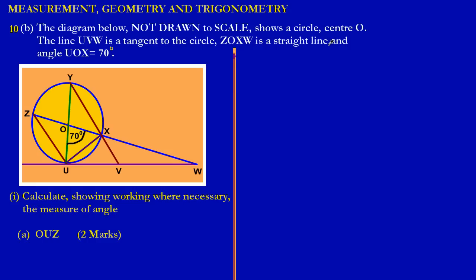ZOXW is a straight line, and angle UOX is equal to 70 degrees. They're asking us to calculate, showing our workings, the measure of angle OUZ. Basically, they're asking us to find the angle that is at U—the letter in the middle.